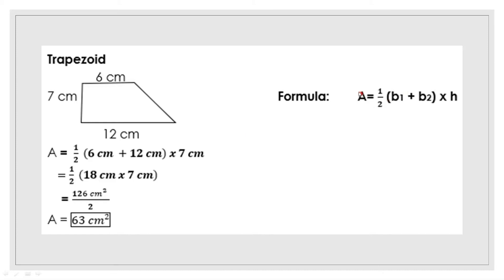Next polygon is the trapezoid. To get the area of a trapezoid, the formula is one-half times the quantity of base 1 plus base 2, times height. First, we add the two bases: base 1 and base 2, which is 6 centimeters plus 12 centimeters, equal to 18 centimeters.